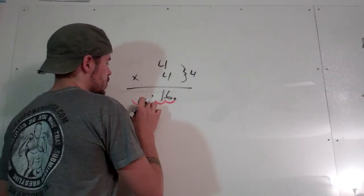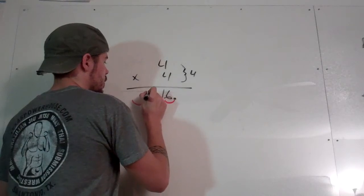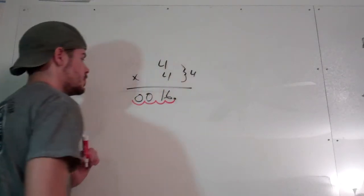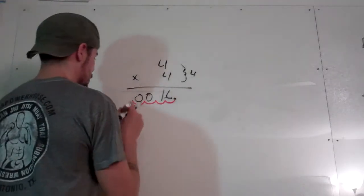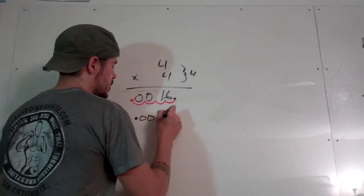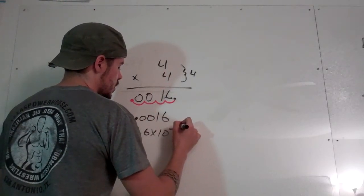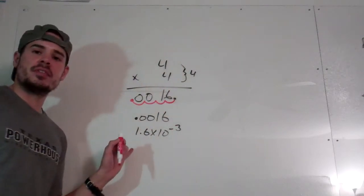Now, wherever you see these little dips here, I'm going to add a zero. So this is where my decimal point should be now. So my final answer is 0.0016, or 1.6 times 10 to the negative 3, if you want to do it in scientific notation.